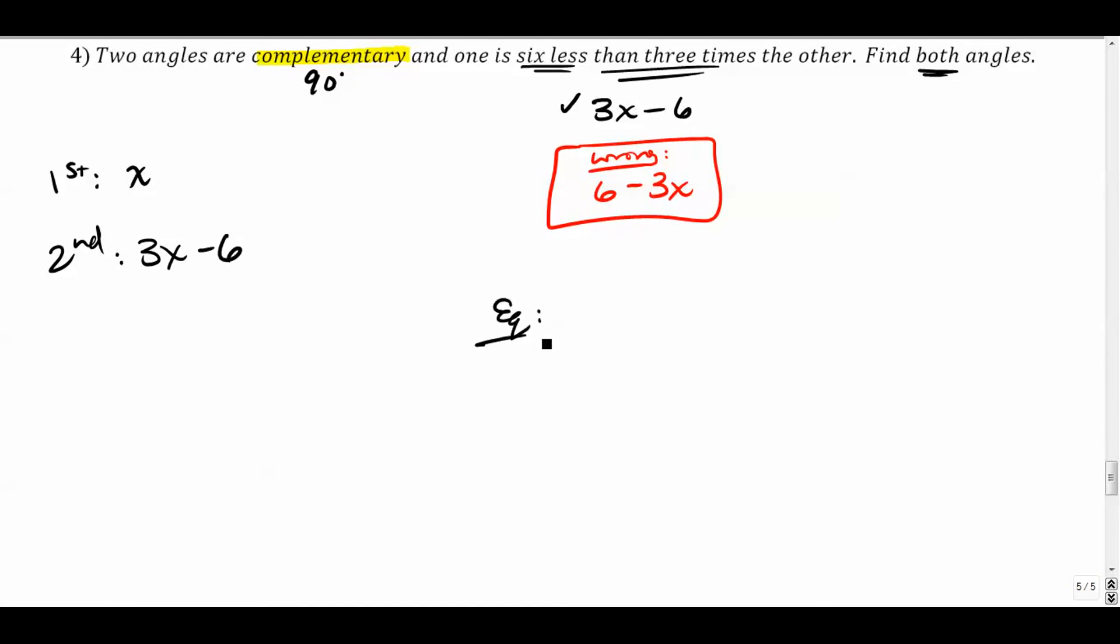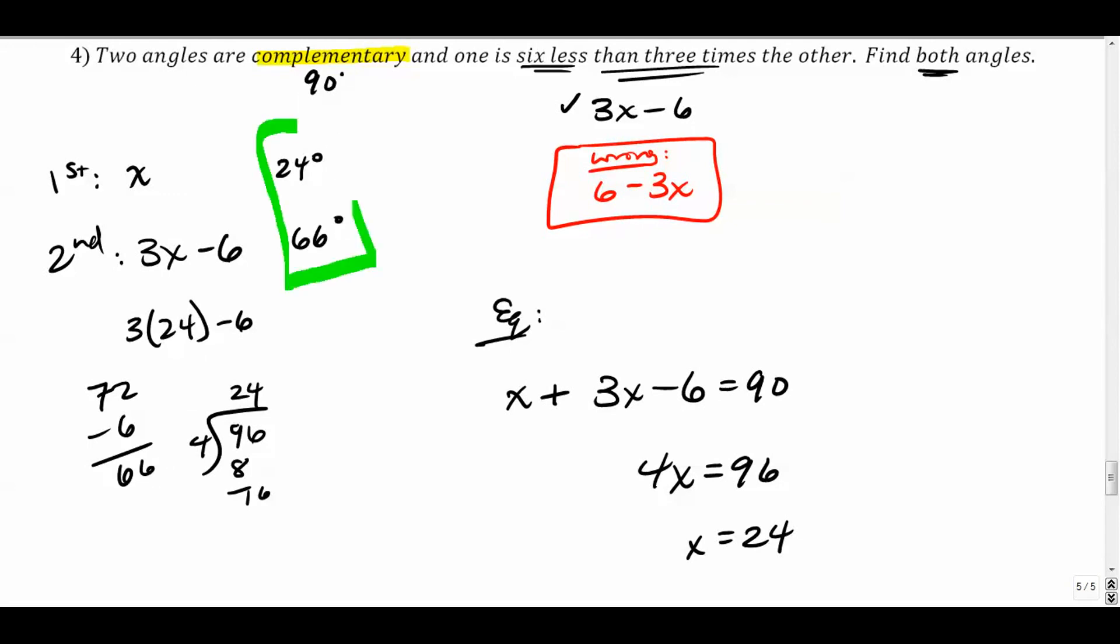Let's write our equation. So we have the first one, x, plus the second one equals 90. So 4x equals 96, and we divide. 96, that's 24. The first one should be 24 degrees, and the second one, 3 times 24 minus 6, so that's 72 minus 6 is 66. And we'll just check to make sure that those two add up to 90. 24 plus 66 is 90, so that works out well.